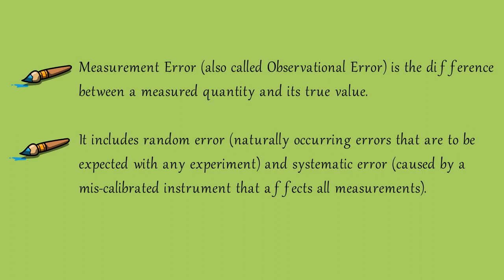Measurement errors include random error — jo ke aapka naturally occurring error hai jo ek experiment mein hona expect kar sakte ho — and systematic error, which is basically an error caused by a defect in your instrument. Agar aapki instrument mein kisi qisam ka masla hai, to us case mein jo error face karte ho woh hota hai systematic error. Agar hum measurement errors ko simply do broad categories mein distribute karein, to woh do categories aati hain: ek random error aur doosri systematic error.